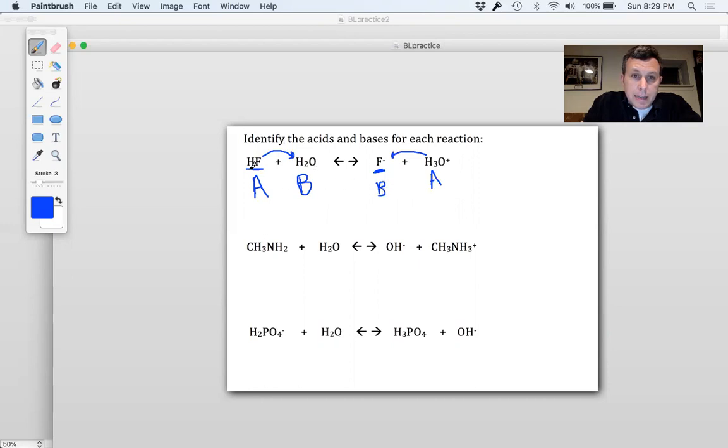Another thing to say is if HF is the acid, it then becomes F-. This is known as the conjugate base of HF. If water is the base here, H3O+ is the conjugate acid. They always come in pairs in this situation.